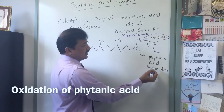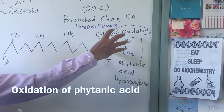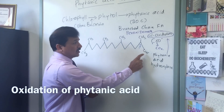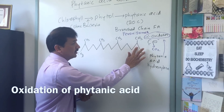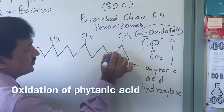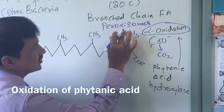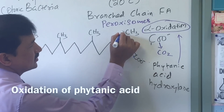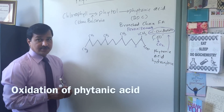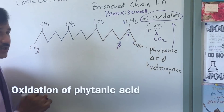Alpha oxidation is initiated by phytanic acid hydroxylase enzyme, and the first carbon is released as carbon dioxide. The second carbon becomes the new carboxyl carbon, so the numbering changes. The new numbering: the carboxyl group is the first carbon, the second carbon is alpha carbon, and the third carbon is the beta carbon.